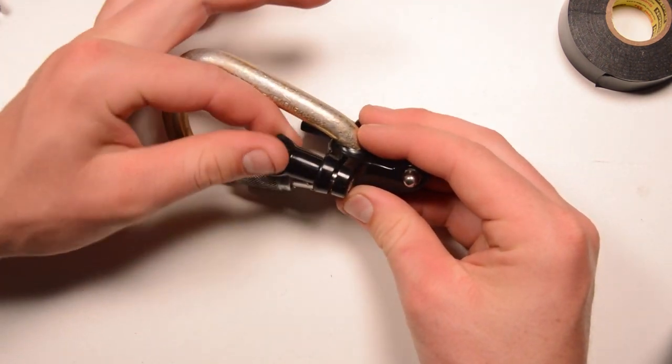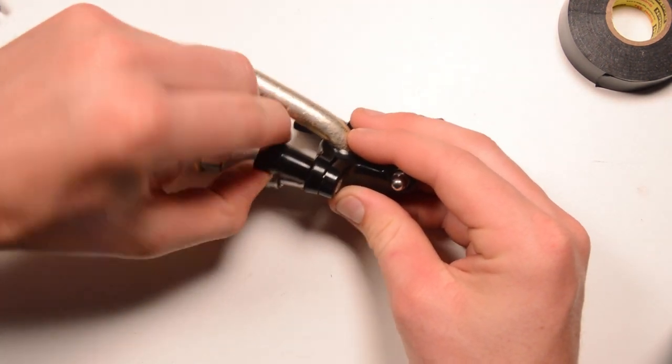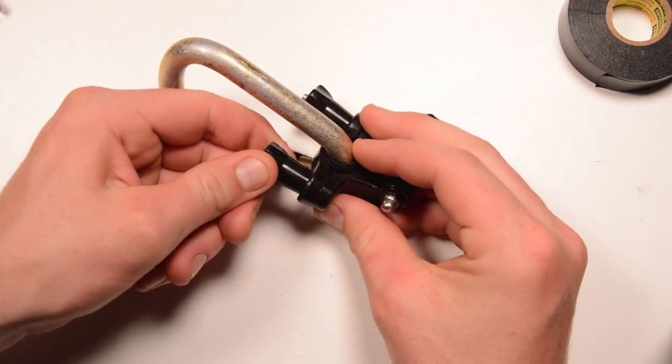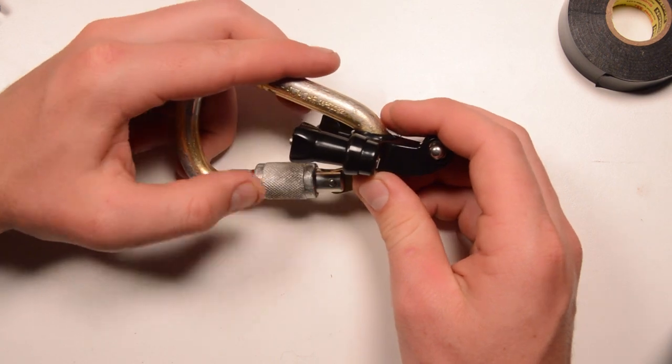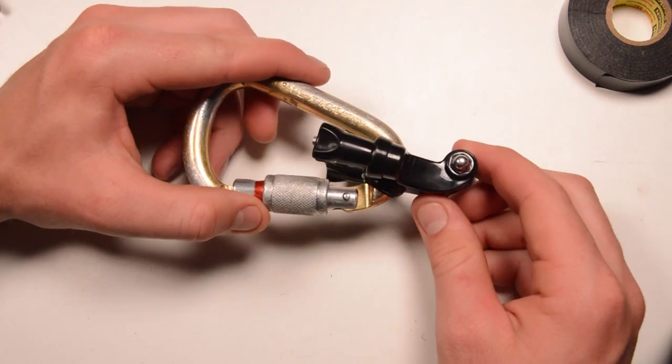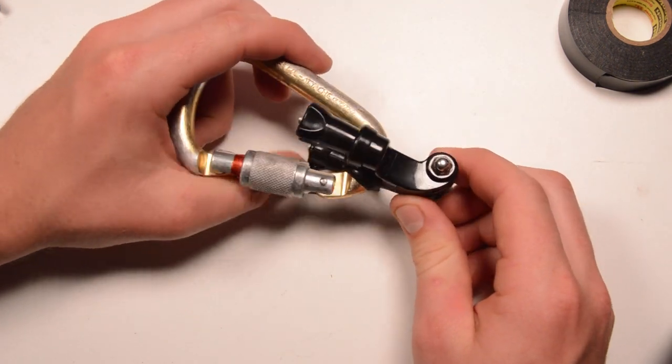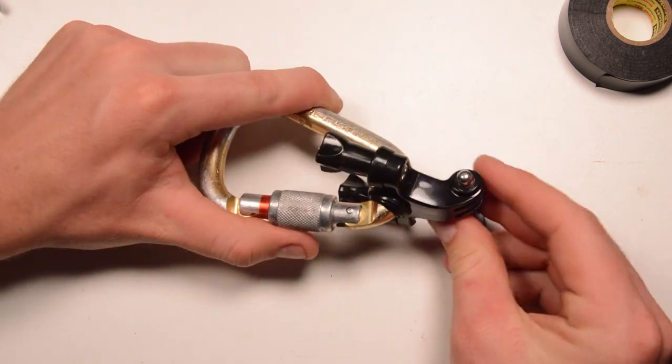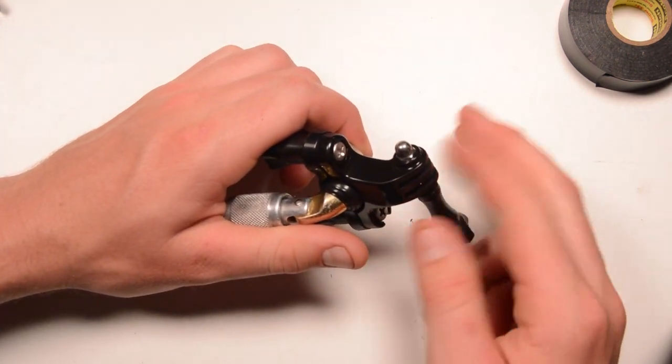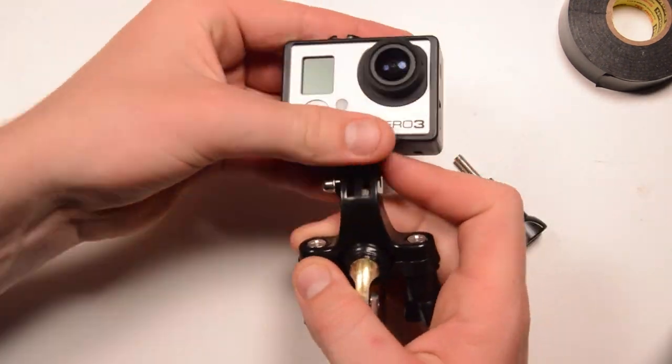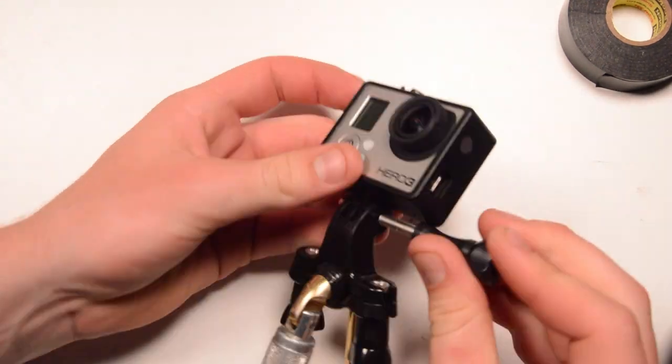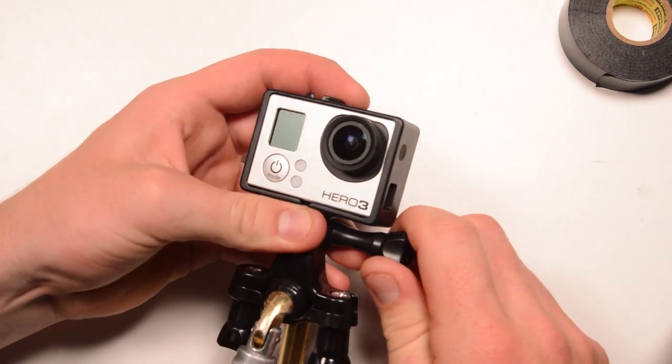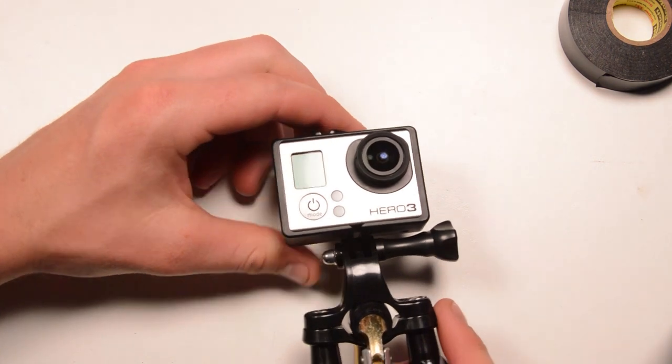You'll want to tighten down both sides of the handlebar mount, just like so. And that is the mount, the handlebar mount on the carabiner. Now we can go ahead and just slap our camera onto the handlebar mount. Just like so. And then we're fully set up.